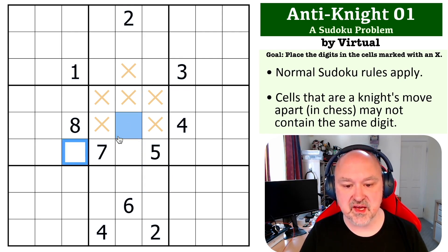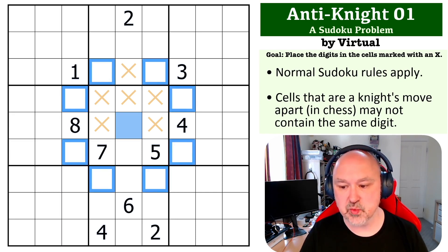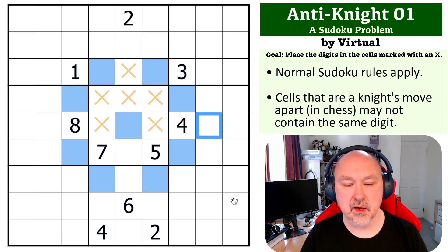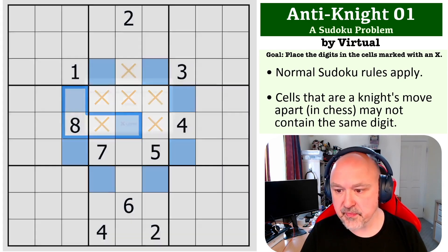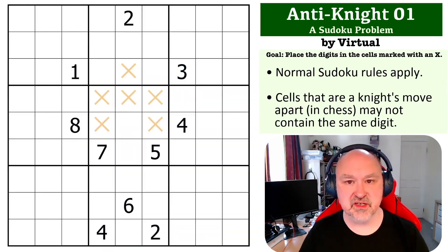So this digit could not appear here, because that would be drawn by an L. It could not repeat basically in any of those squares, as well as the normal Sudoku eliminations, because I can hit all of those squares by drawing that L. So that's how the anti-knight constraint works.